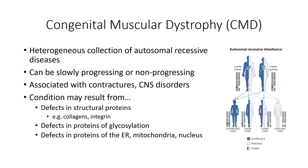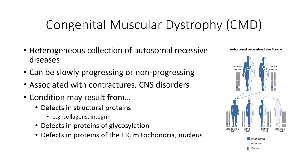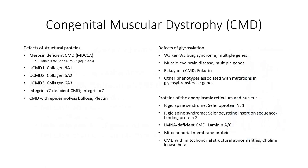There is also some variability in the presentation pattern. While skeletal muscle abnormalities are present in all instances, other organ systems, including cardiovascular and central nervous system, are affected in some but not all of the disorders. Additionally, in some cases the patient's condition will progressively deteriorate throughout life, while in others it will stabilize at an early age.